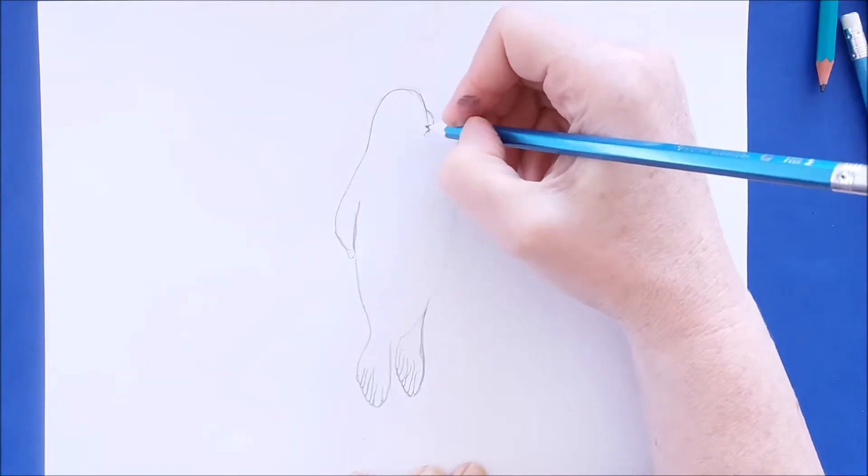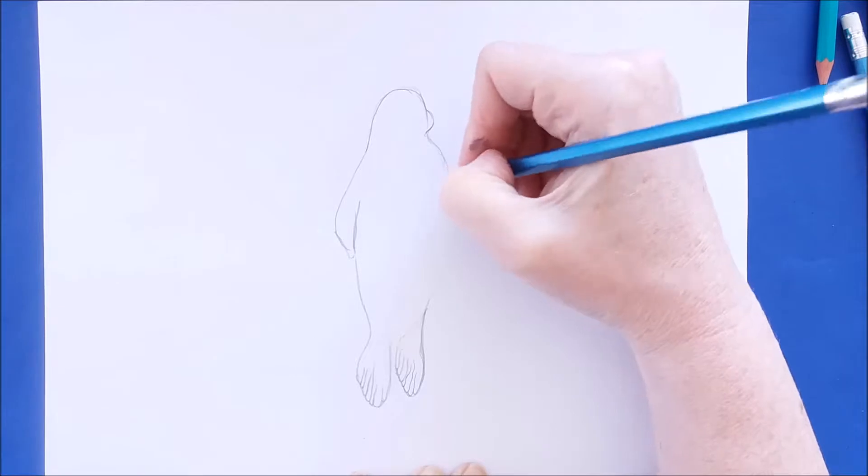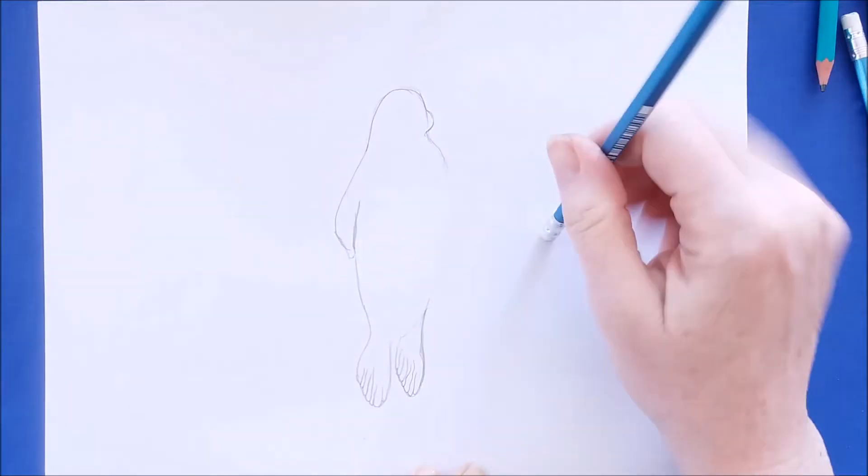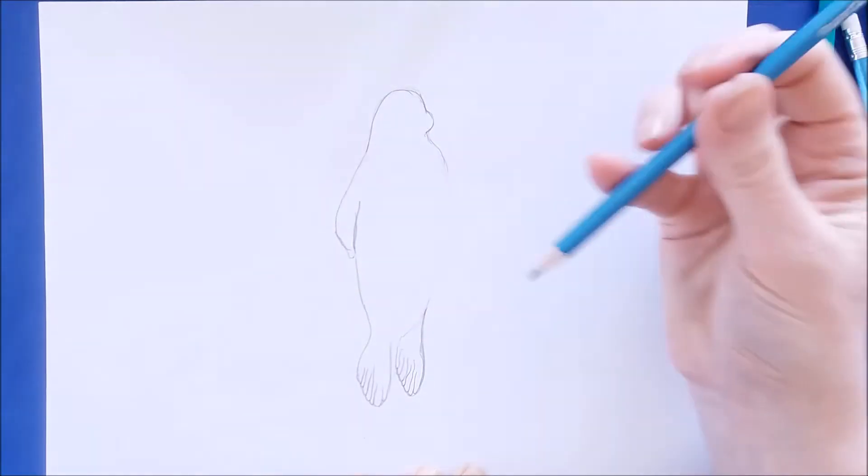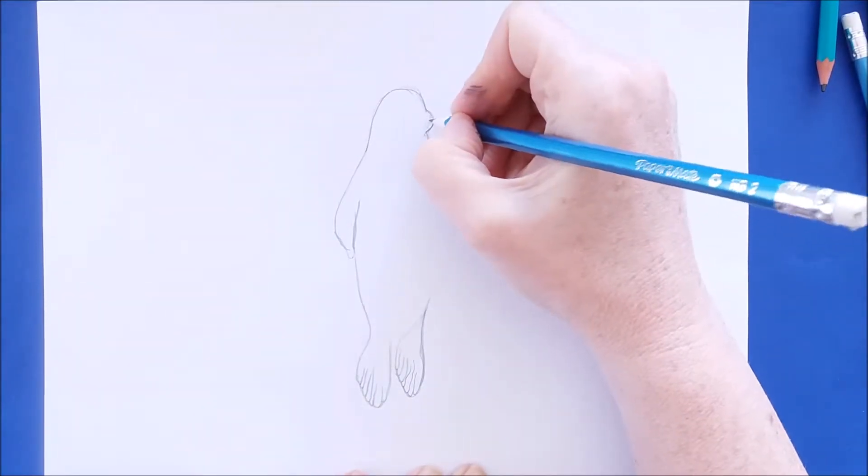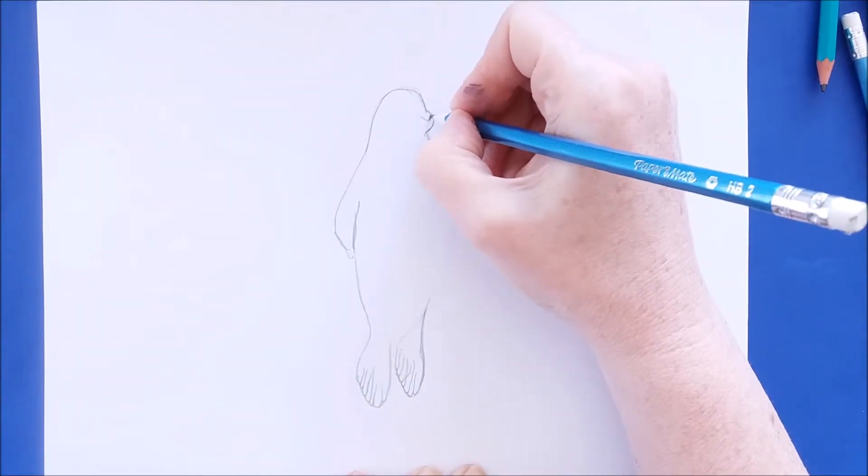This little curve is his nose and then inside of the nose I'm going to draw his nostrils and that's just a little V right there.